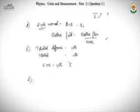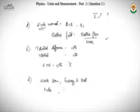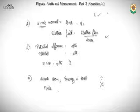Option C: work done equals force times displacement; energy is the amount of work done; heat is also measured in joules and is a form of energy. All three have the same dimensions. Option C is not the answer either. The correct answer for question three is option D: dipole moment, electric flux, and electric field.